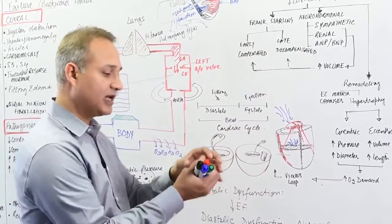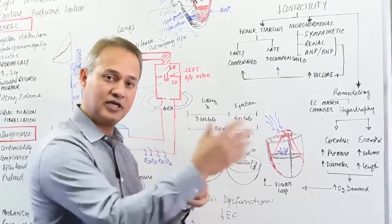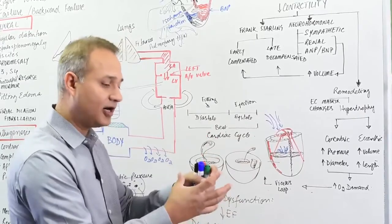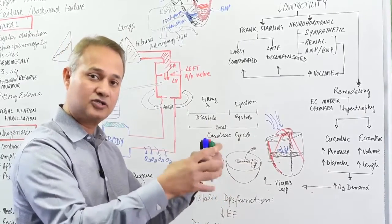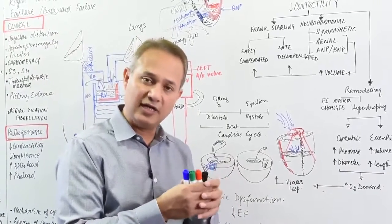What does that mean? As the heart starts failing, venous return is still sufficient but output is not, so the heart starts stretching. That stretching causes increased contractility—that's the Frank-Starling mechanism. In the early part, that actually helps.